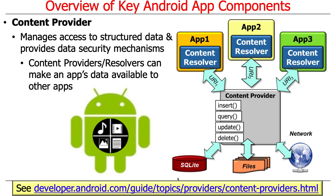Examples of things that use content providers include keeping track of your search history in the browser — so when you start typing in the URL bar, it can auto-complete because it knows what you've searched before. Other things that use content providers are your contacts, calendar events, SMS and MMS messages — databases that track the history of those things. Content providers are the means by which that information is stored locally in a structured way so you can get access to it. Google, being a search company, optimizes very heavily for this kind of search.